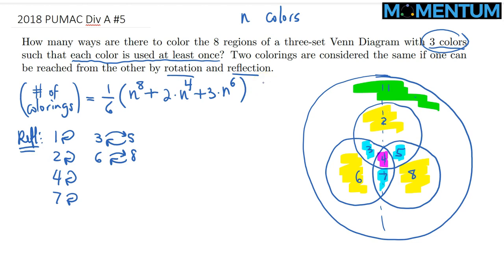Now, in our particular case, n is equal to three. So, therefore, we can start with a running total of one-sixth three to the eight plus two times three to the fourth plus three times three to the sixth. And I believe this is equal to 1485. Now, like I said, this is just an initial step. And well, why is this not the answer?